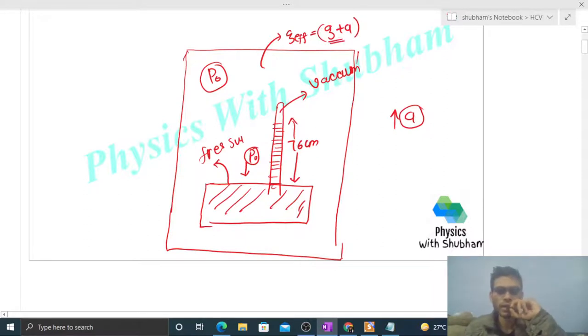Now at the mercury's free surface level in this container, we take a point A inside this barometer tube at the same level. The pressure there will be...